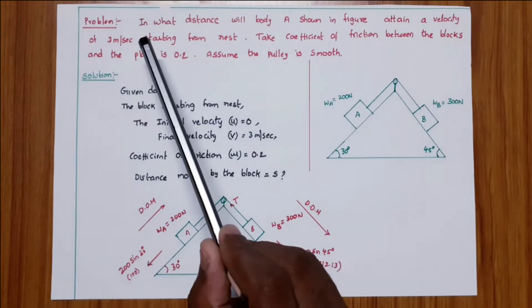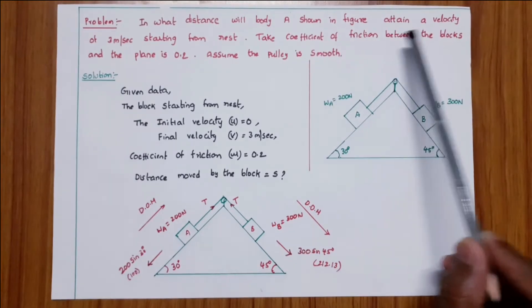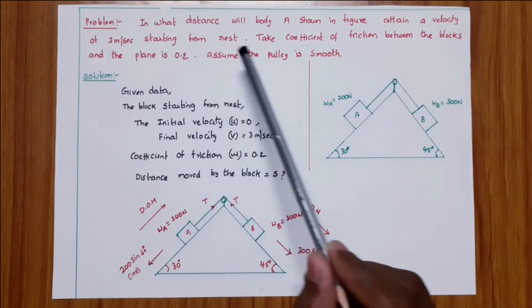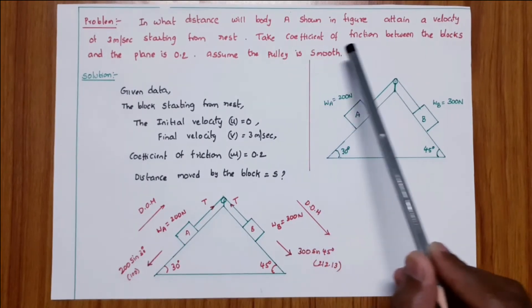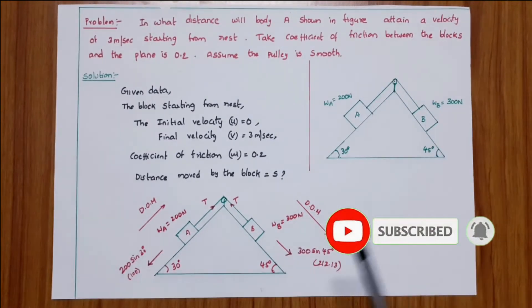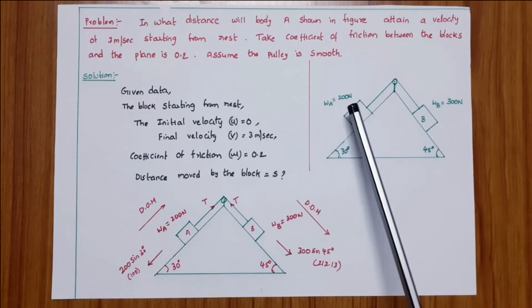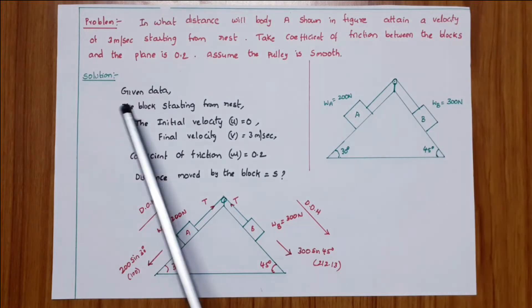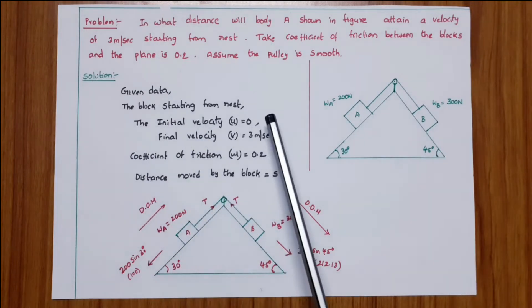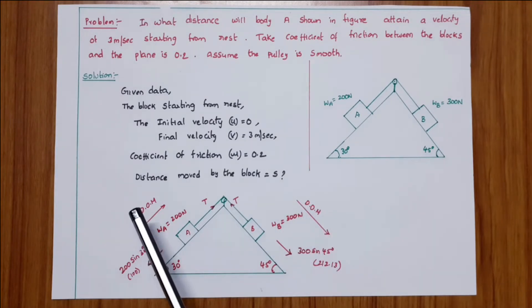Problem on work-energy method. In what distance will body A attain a velocity of 3 meters per second starting from rest? The coefficient of friction between the blocks and the plane is 0.2. Assume the pulley is smooth. Block A weight is 200 Newtons, block B weight is 300 Newtons. The block starts from rest, so initial velocity u equals 0, final velocity v equals 3 meters per second. We have to calculate the distance s moved by the block.